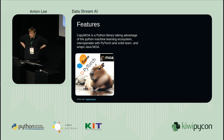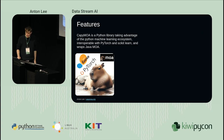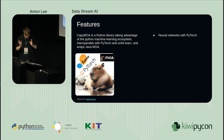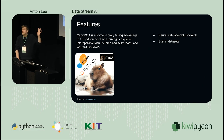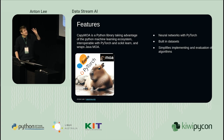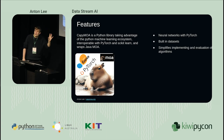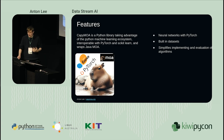Capimoa has lots of features. It's taking advantage of this big ecosystem and also has the advantage of wrapping some things that are in Java and MOA. So we have neural networks with PyTorch, we have a few built-in datasets and we're likely to get some more. It simplifies implementation, and importantly for research, the evaluation of these algorithms to see what their pros and cons are.